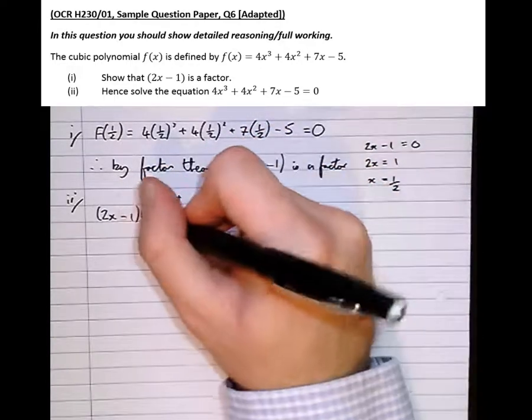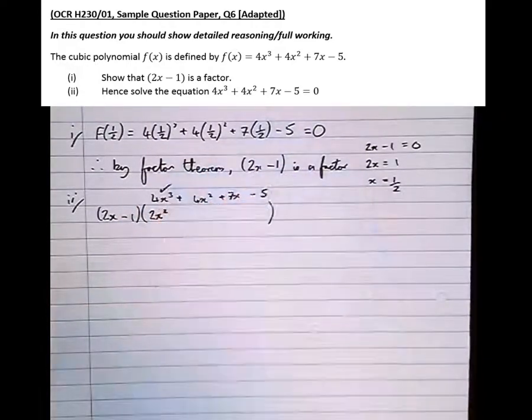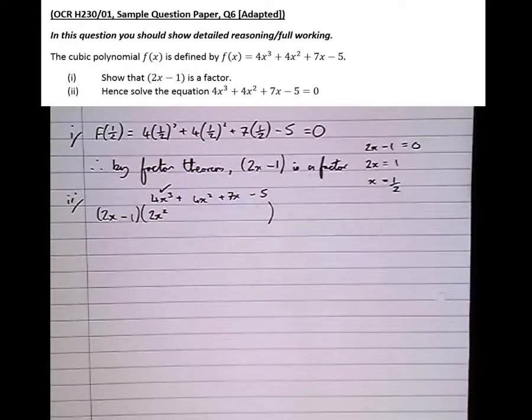Well, notice I need 4x cubed. So I put 2x squared there. 2x times 2x squared is 4x cubed. So we've got that. I'll put a tick there.